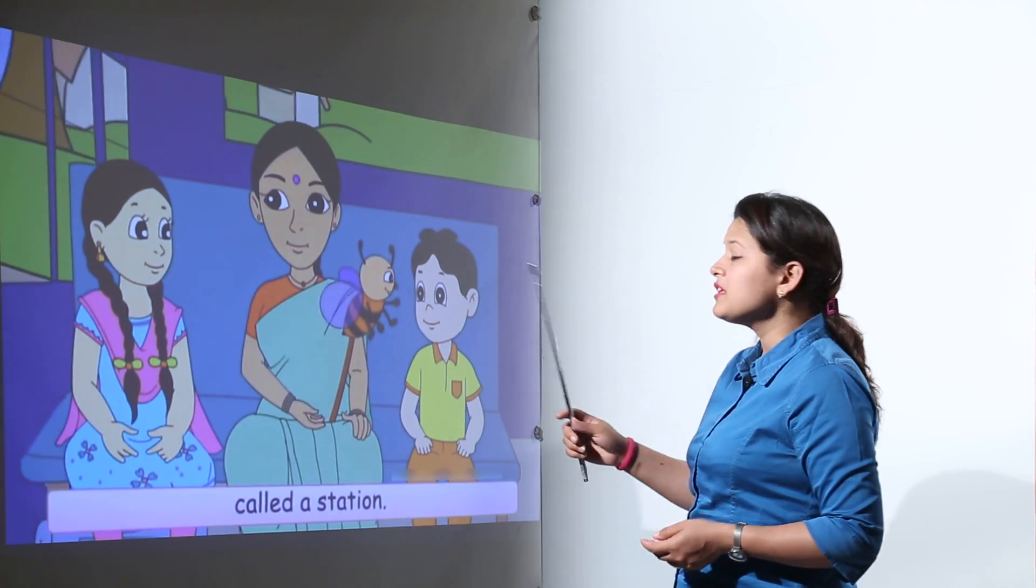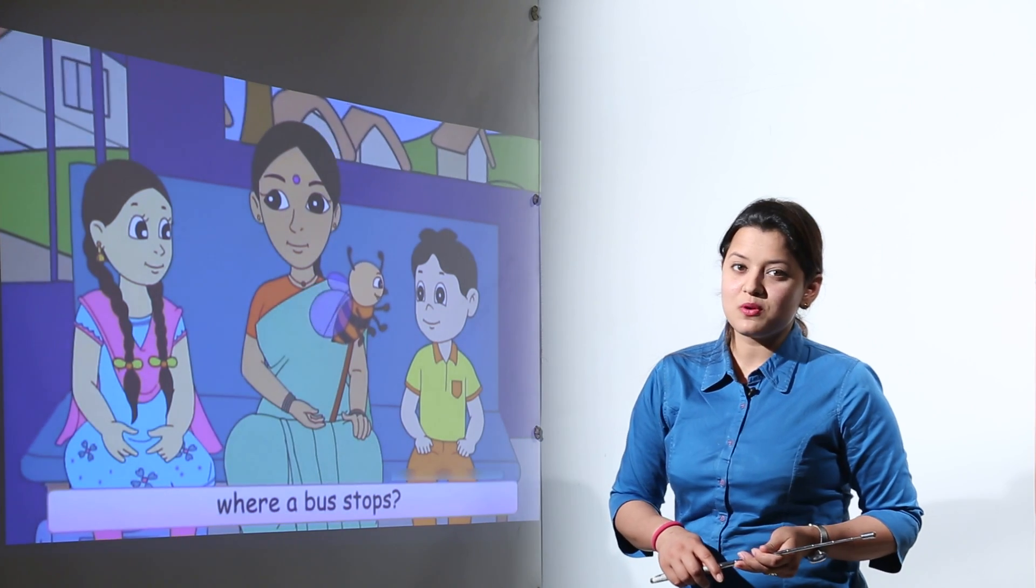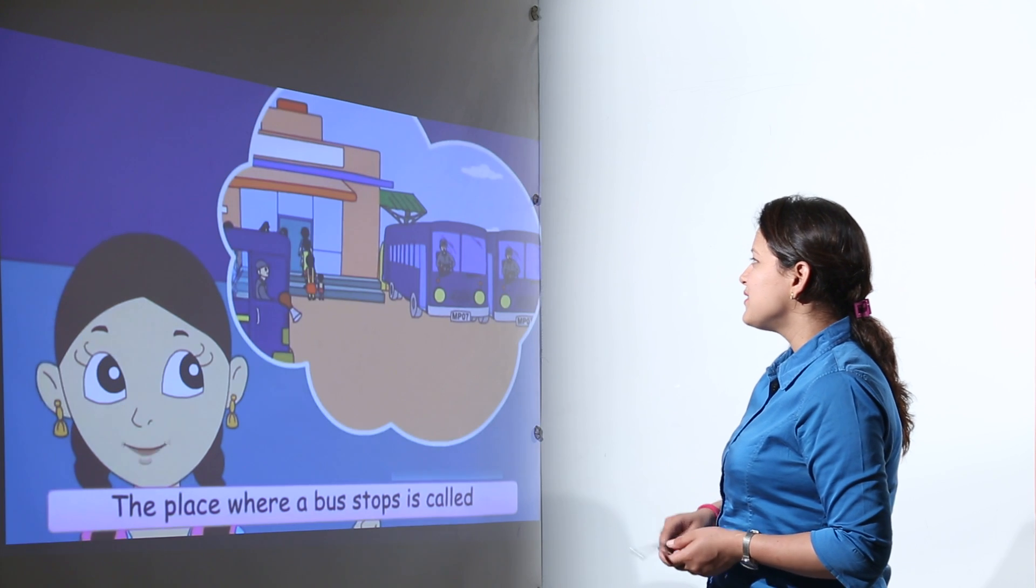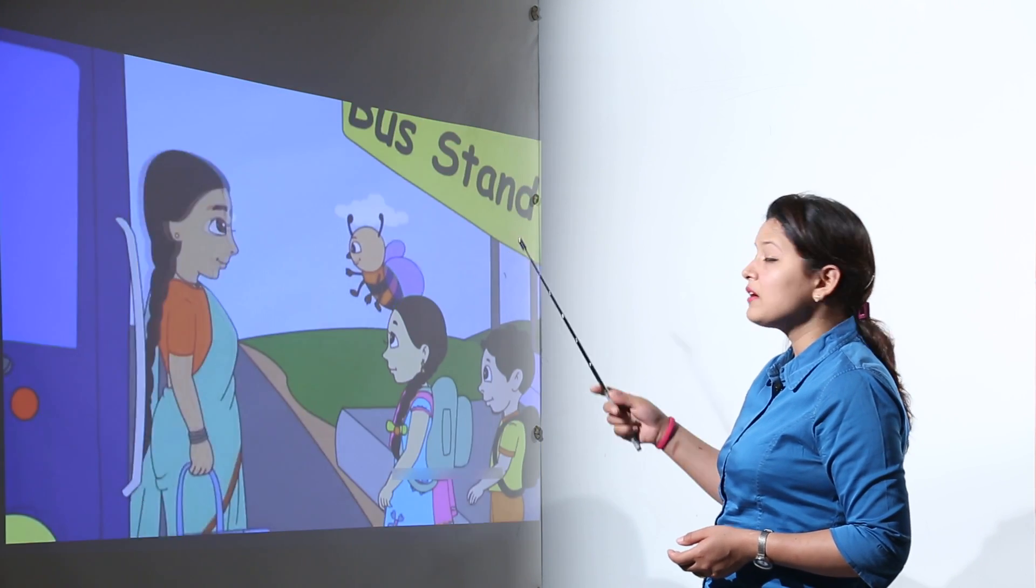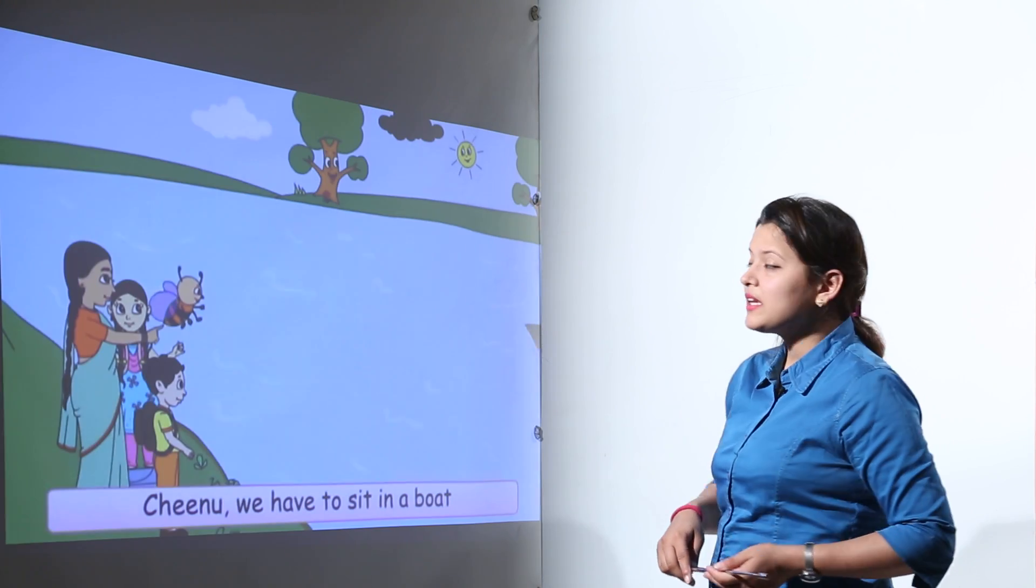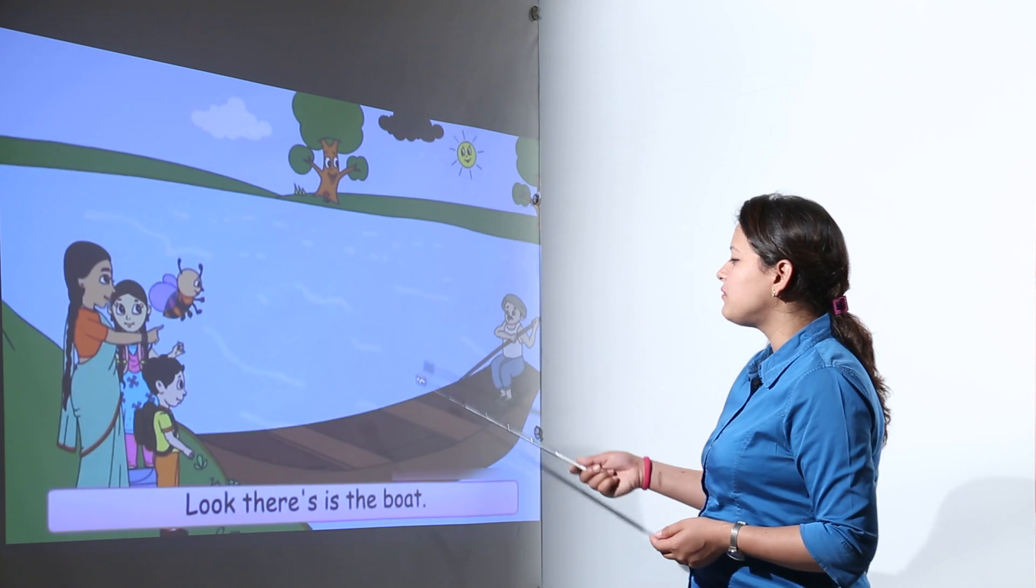The place where train stops is known as railway station, but the place where bus stops is known as a bus stop. We know that there are two places, it is known as a bus stand or a bus depot, whereas the place where train stops is known as a railway station.